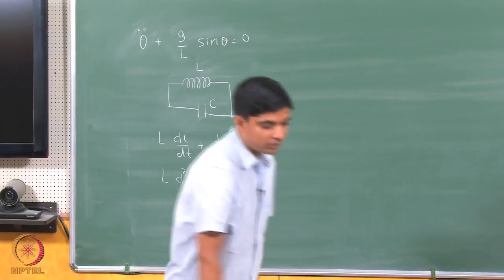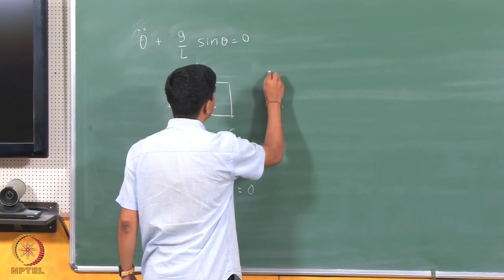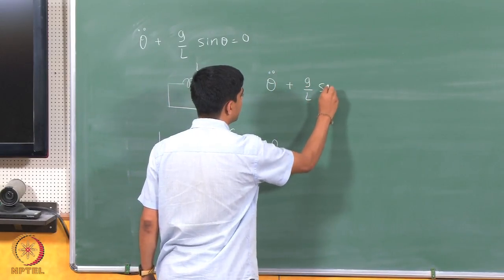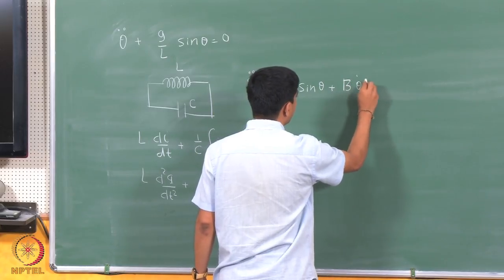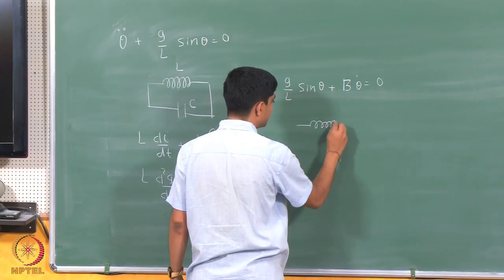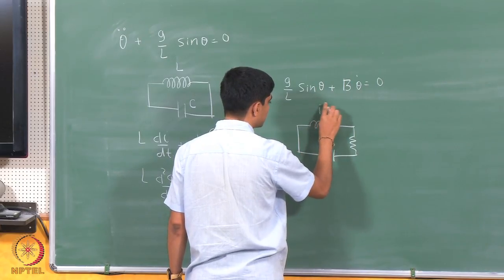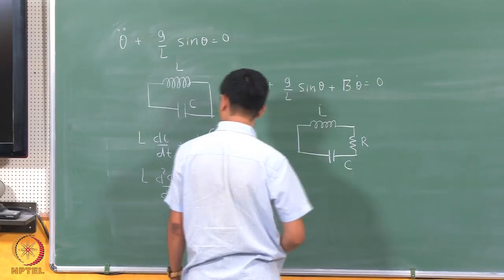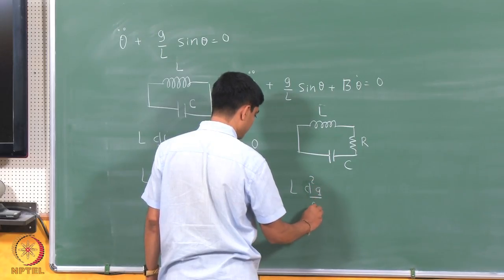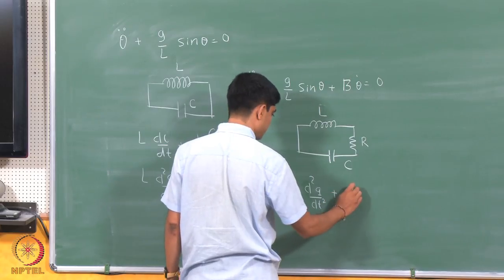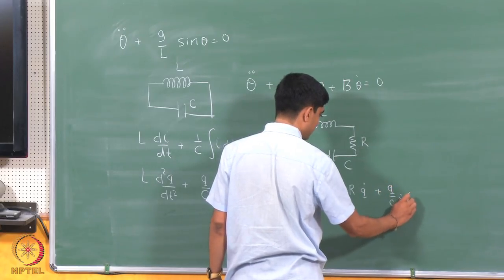When we had the pendulum with some friction element, we had an additional term. The equations look like theta double dot plus g over L sin theta plus b theta dot equals 0. The analog here would be an RLC circuit — I just add a resistance R — so L d²q/dt² plus R times q dot plus q over C equals 0.